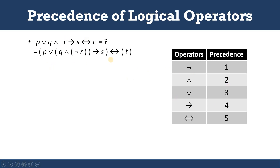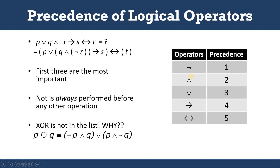Applying the precedence rule, this expression should be evaluated as shown. This is the precedence rule — when an exception exists, the precedence rule still governs how the compound proposition is evaluated.